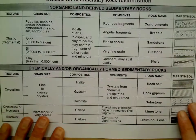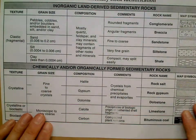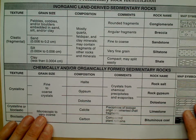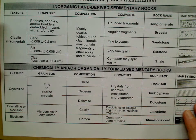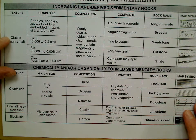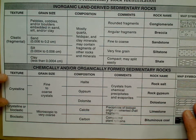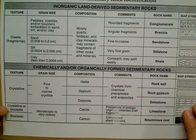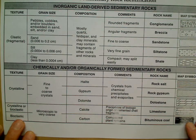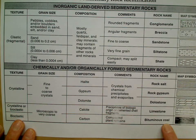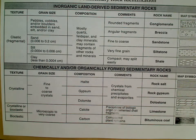Let's get into the Earth Science reference table for these rocks. Sedimentary rocks fall into a few categories. The first texture is clastic — meaning fragments of other rocks. There's also crystalline, which forms from crystals. And then there's crystalline or bioclastic — 'bio' means life, 'clastic' means pieces — so bioclastic means pieces of life. Our example for that is coal.